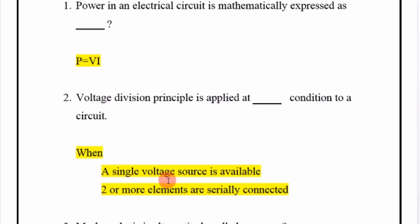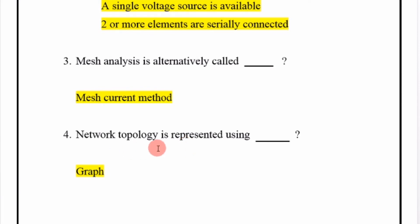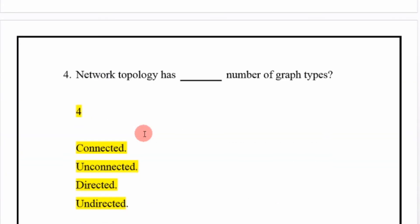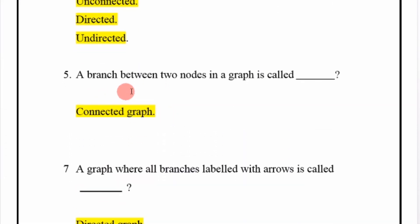Mesh analysis is alternatively called the mesh current method. Network topology is represented using a graph. Network topology has four types of graphs: connected, unconnected, directed, and undirected. A branch between two nodes in a graph is called a connected graph.